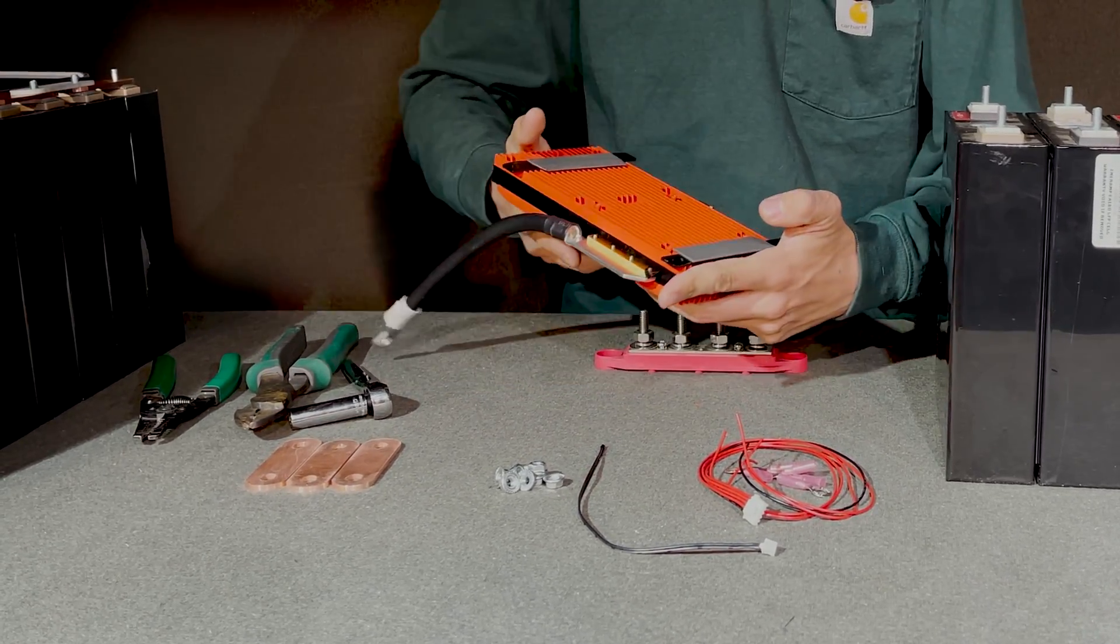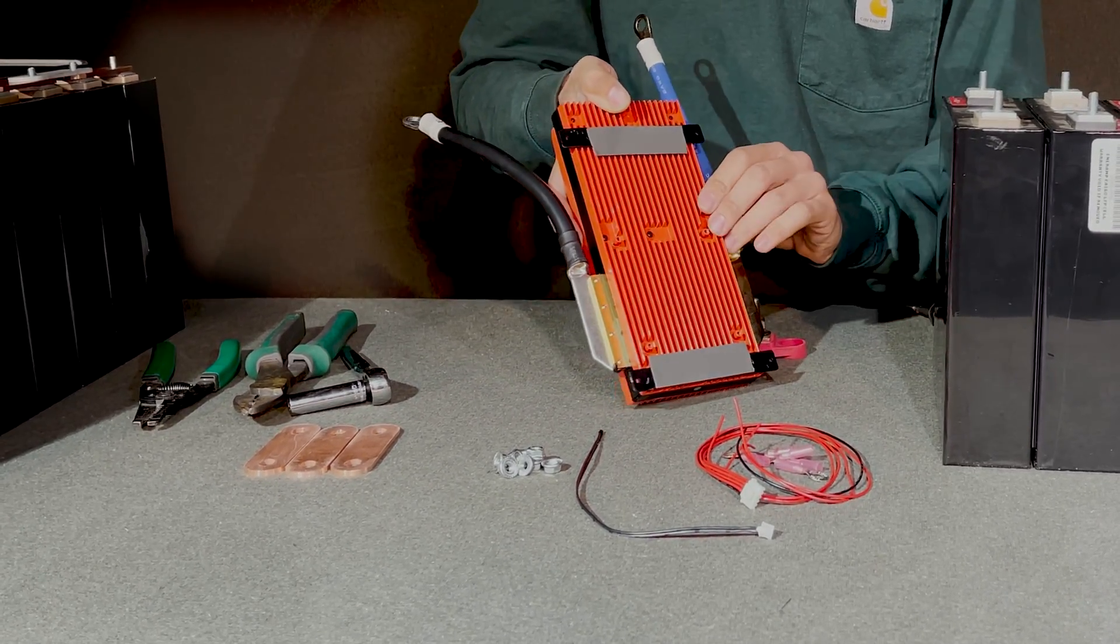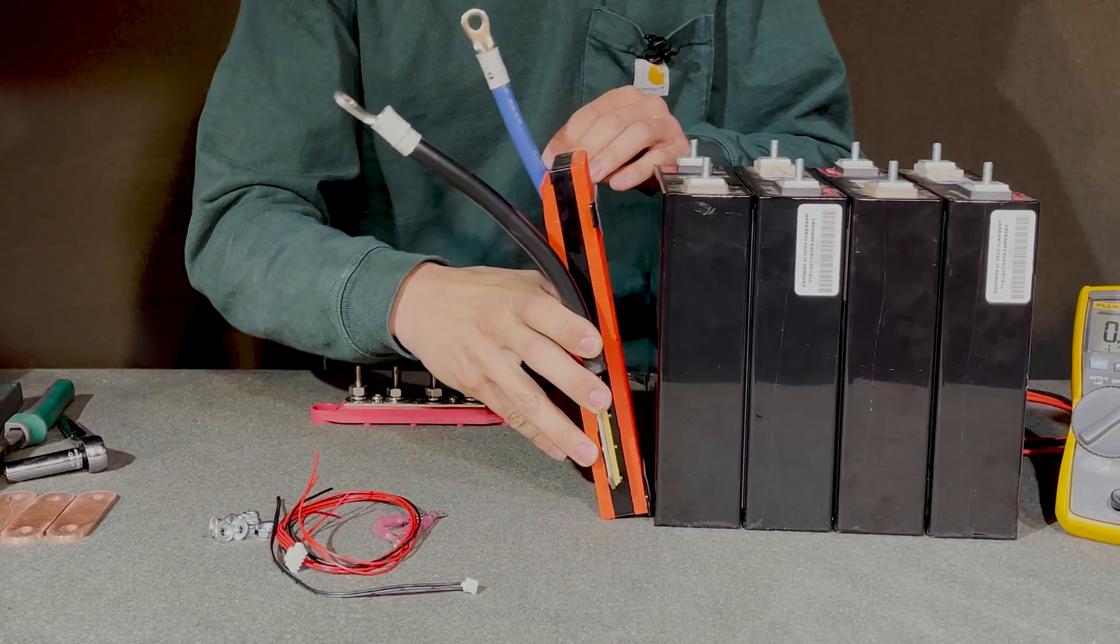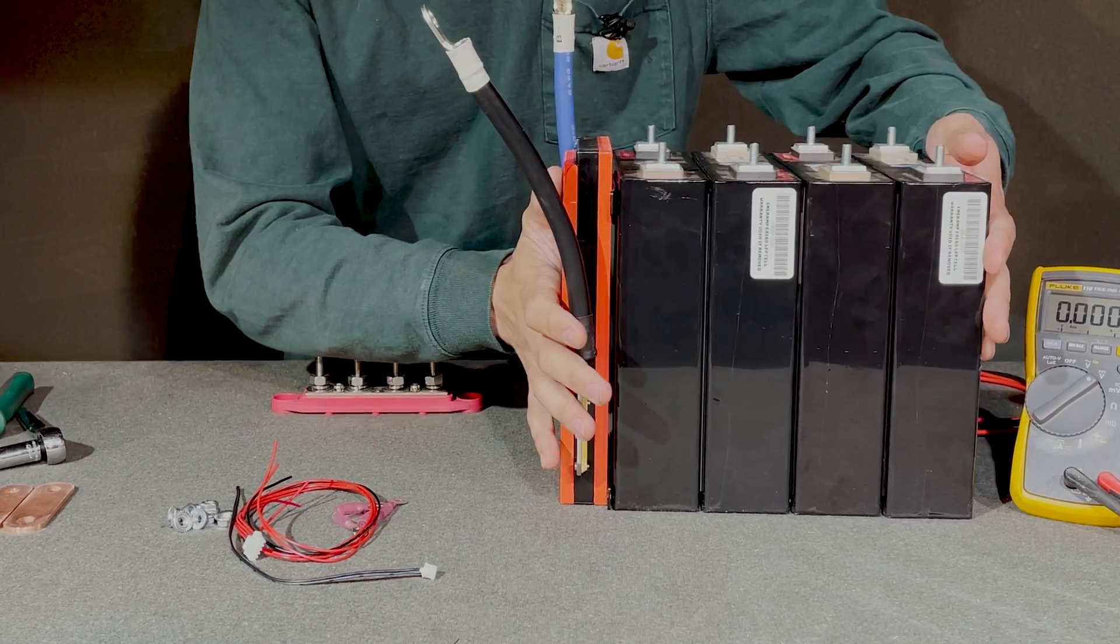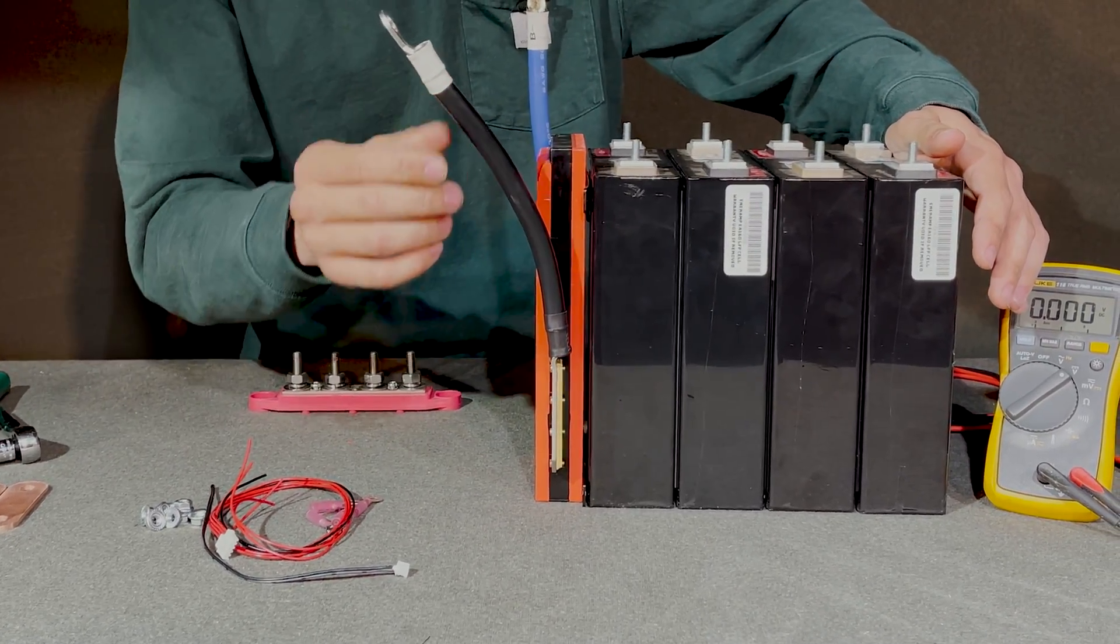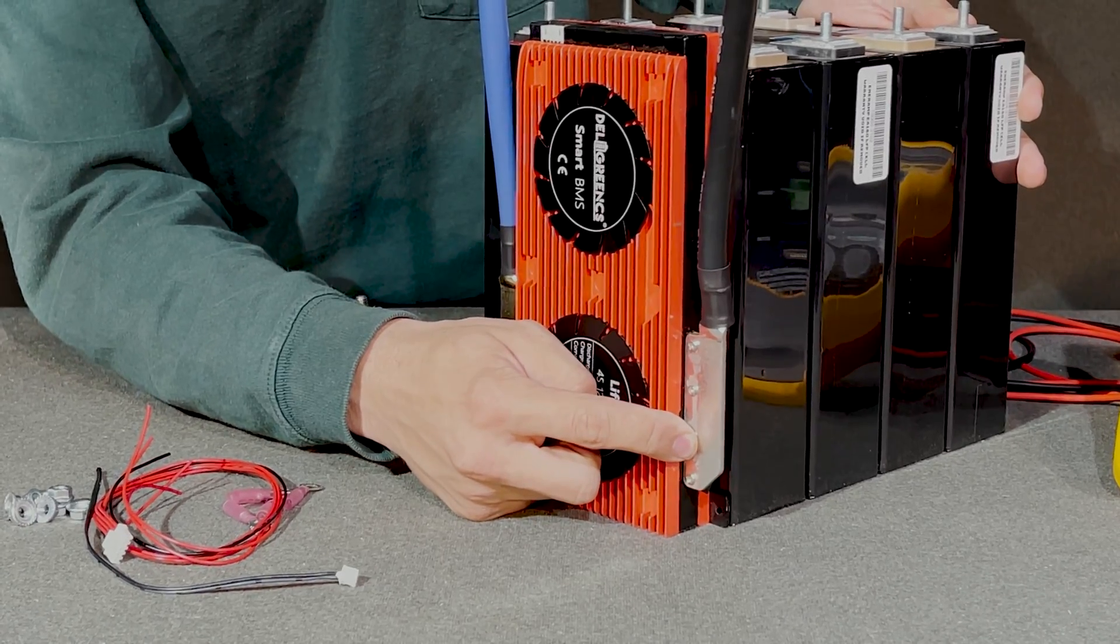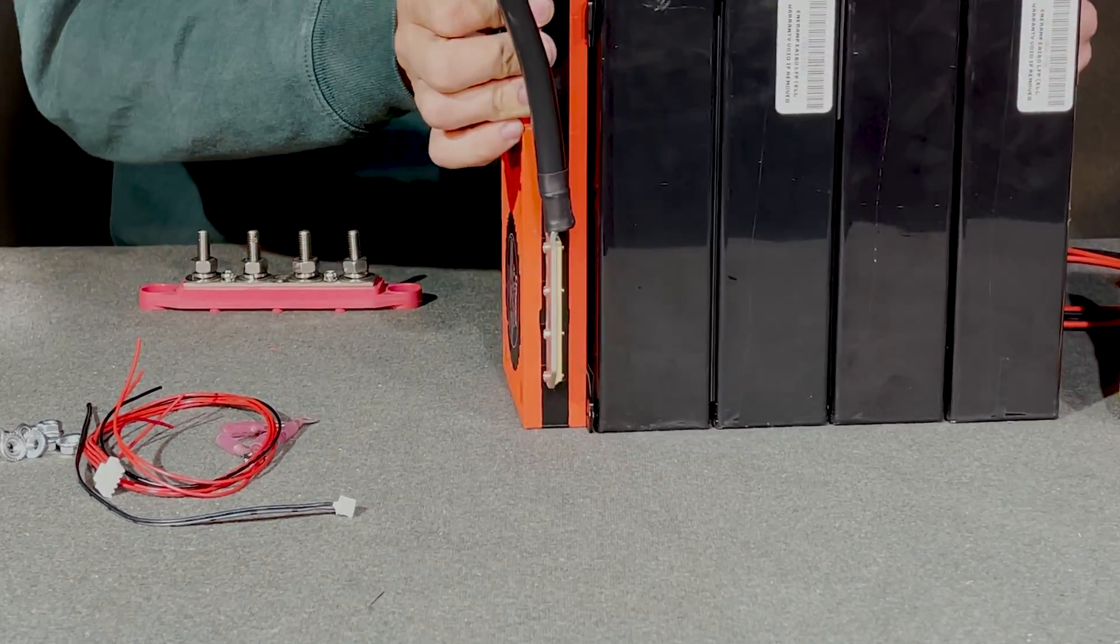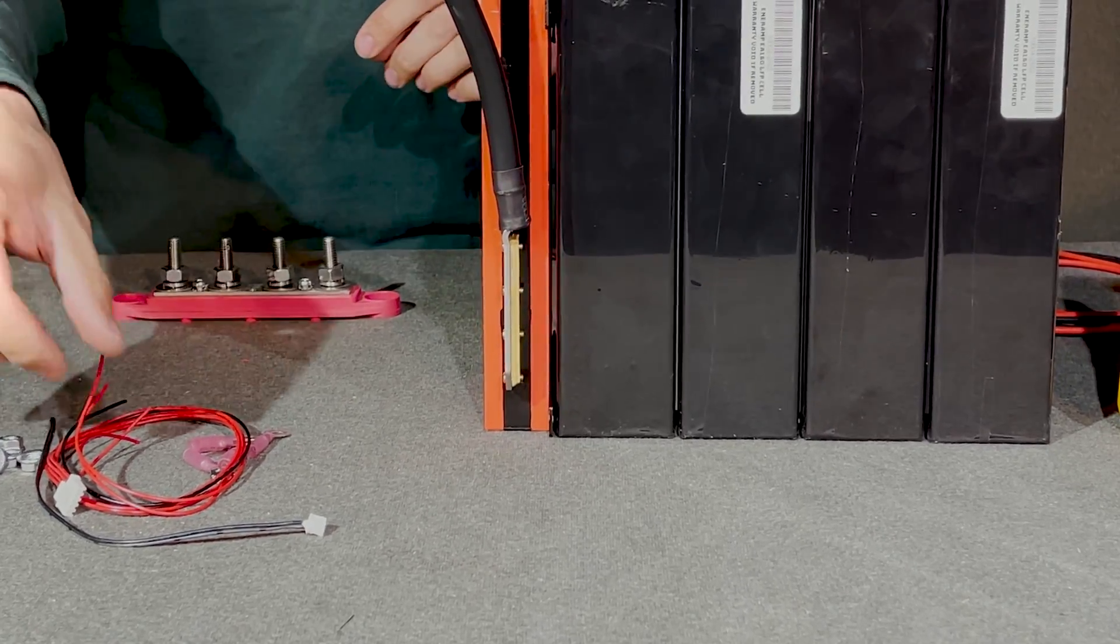Now getting started, I've pre-applied some VHB tape to the back of this BMS and I'm actually going to just stick that right over here on the side of these batteries. Now you may be wondering about these leads. I've gone ahead already and removed the screws from them and flipped the leads around so that it's a little bit easier to get these on the battery.